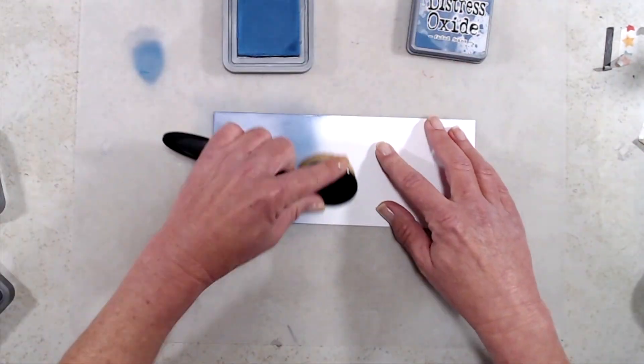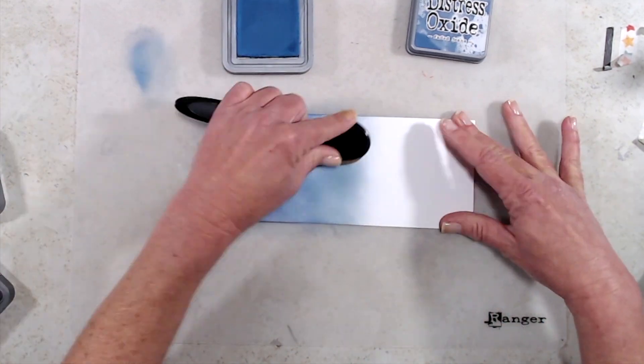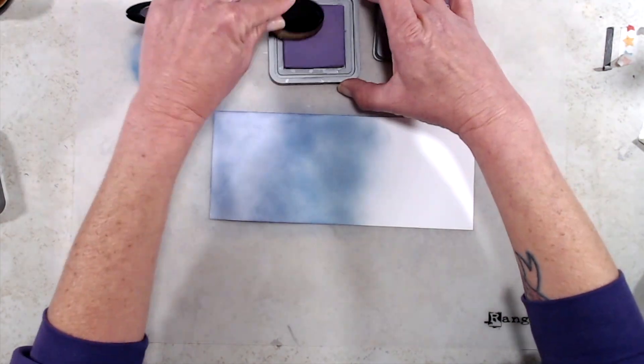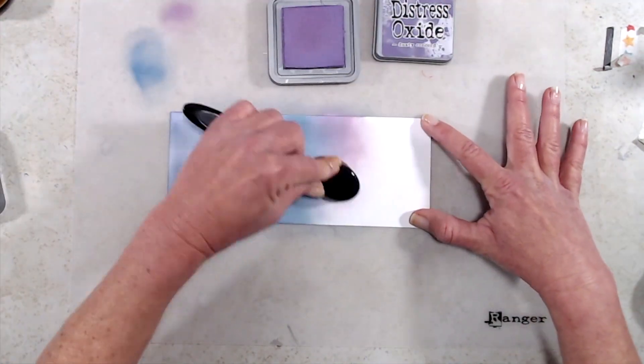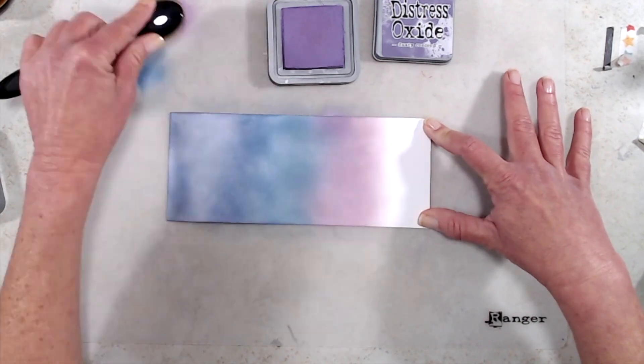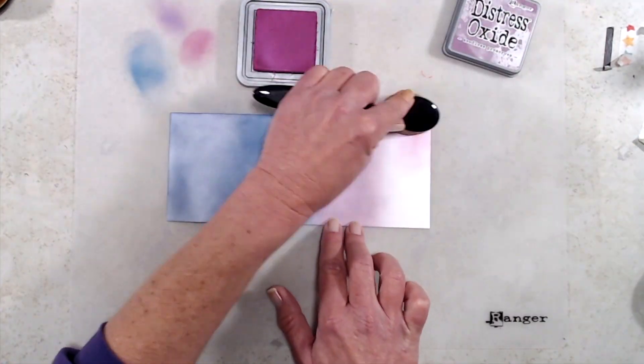And then I moved on to Faded Jeans. I'm not going for a perfect blend right here, I just want to get some color on my cardstock because I'm going to come back in and do more ink blending with a homemade stencil. After the Faded Jeans I came in with Dusty Concord and then I finished up with Seedless Preserves on the very bottom.